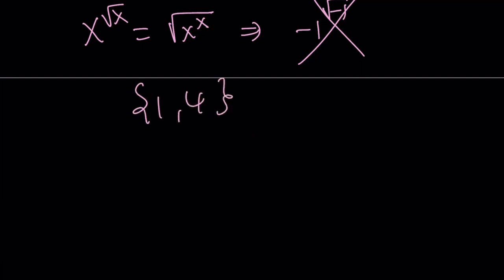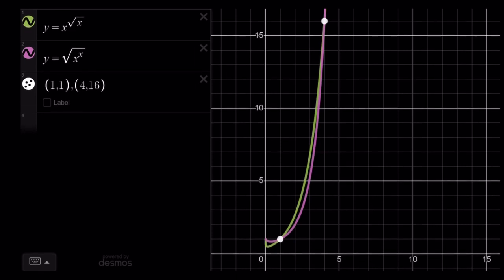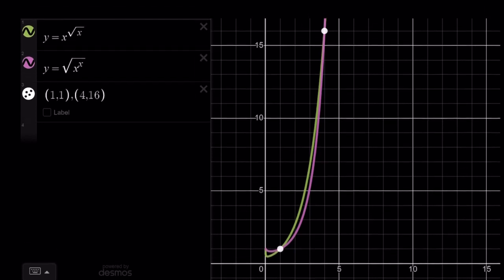Now, I want you to take a look at the graph. So, I graphed both of these functions for you. Y equals x to the power of square root of x and y equals square root of x to the power of x. And you can see the intersection points here. The green one is the x to the power of square root of x. And the pink one is the square root of x to the power of x. They intersect at 1, 1 and 4, 16. And obviously, one of these functions is going to grow much faster. Therefore, they're not going to intersect again.